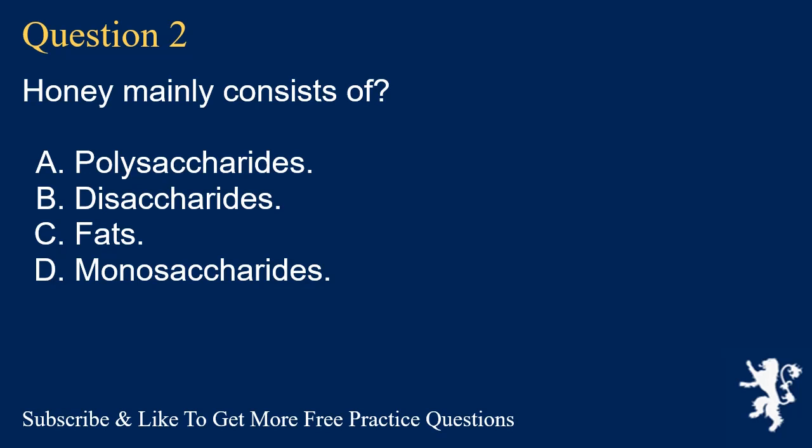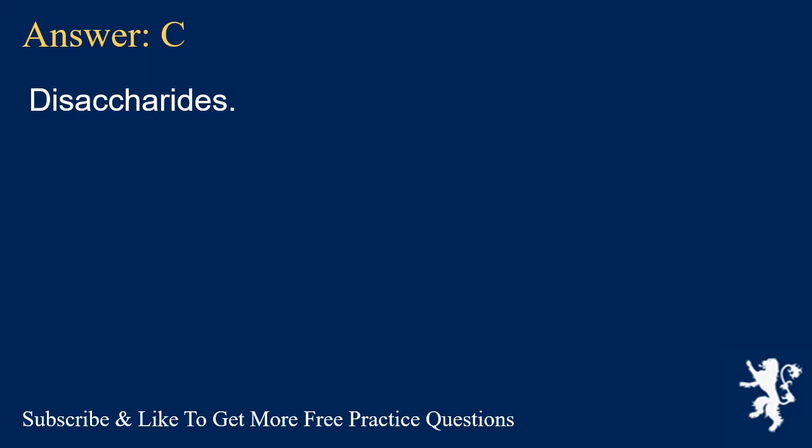Question 2. Honey mainly consists of? A. Polysaccharides. B. Disaccharides. C. Fats. D. Monosaccharides. Answer: C. Disaccharides.